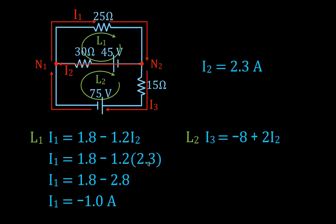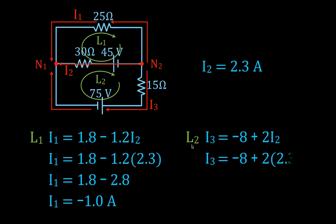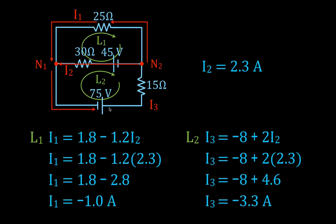The negative sign for I1 doesn't mean the current is literally negative — it means we chose the wrong direction initially. So I1 actually flows in the direction opposite to what we chose, meaning counterclockwise. Doing the same substitution for I3: plugging in I2 equals 2.3 gives I3 equals minus 3.3 amperes — again, the minus sign means the actual direction is opposite to our initial arbitrary choice.